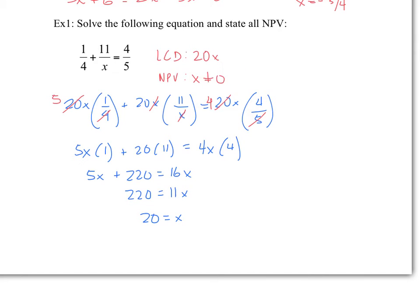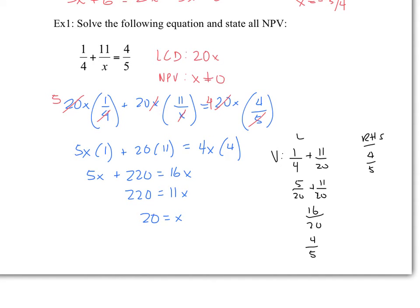Notice that x equals 20 is not a non-permissible value. You should verify these — on the left side you have one quarter plus 11 over 20. The common denominator is 20, so that's 5 over 20 plus 11 over 20, which gives 16 twentieths. Dividing by 4, we have 5 quarters. The right-hand side is also 5 quarters. Therefore both sides are equal.